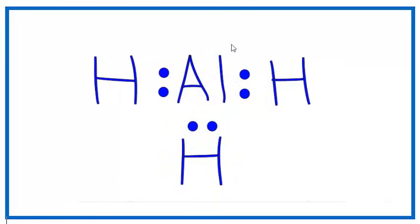If you check the formal charges, you'll see that this is the best structure for BH3. If we were doing AlH3, we would just have an Al where the B is, and that would be the correct structure for AlH3.